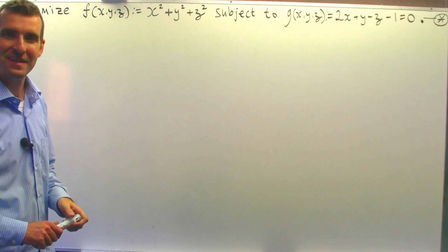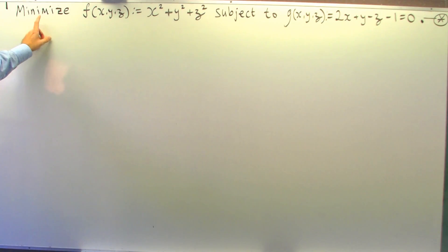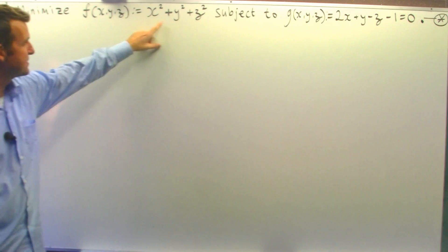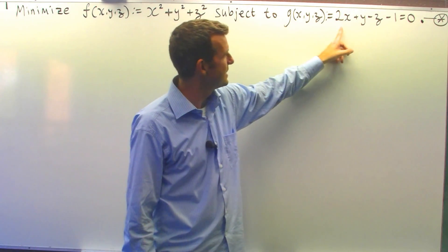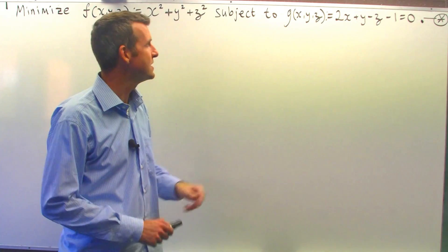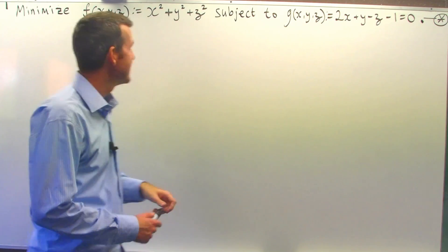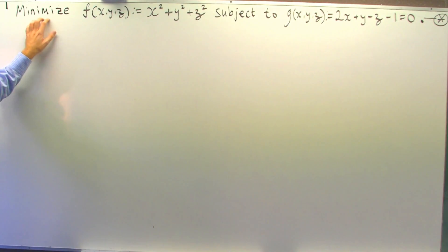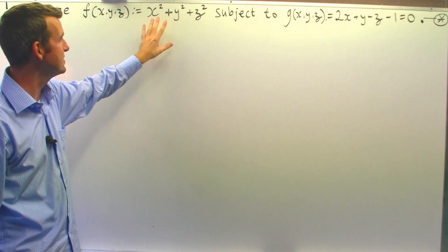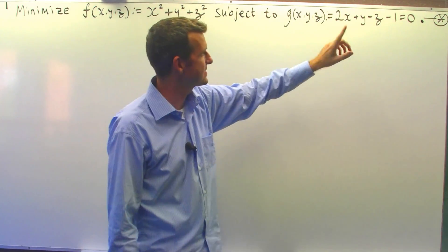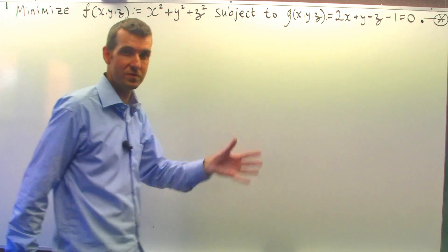Hi again everyone. In this particular example, I'm asked to minimize this particular function subject to this equation here. This is known as a constraint and we want to find the minimum value of f, or where the minimum occurs, such that this particular constraint or this equation is also satisfied.